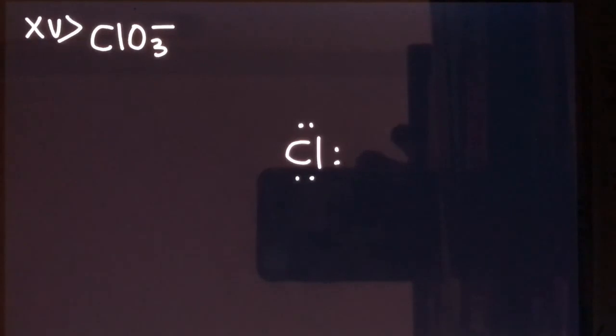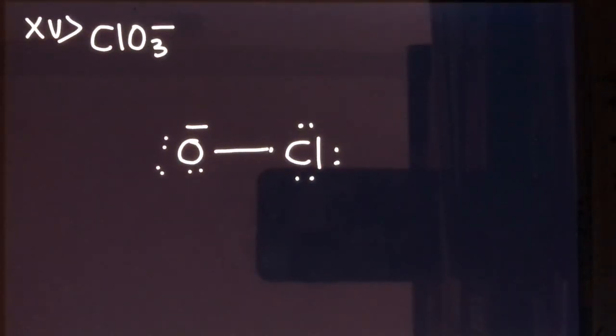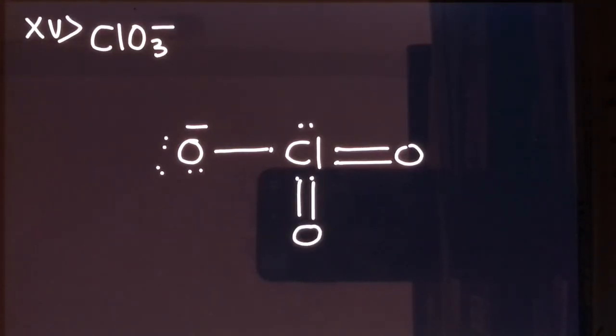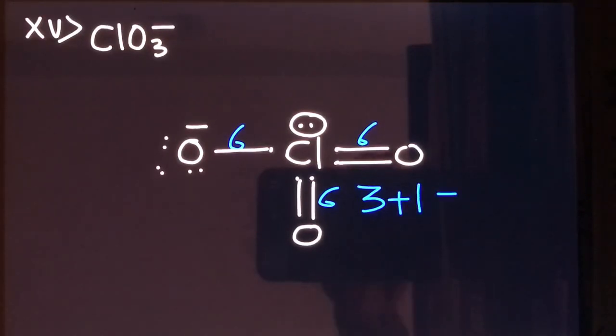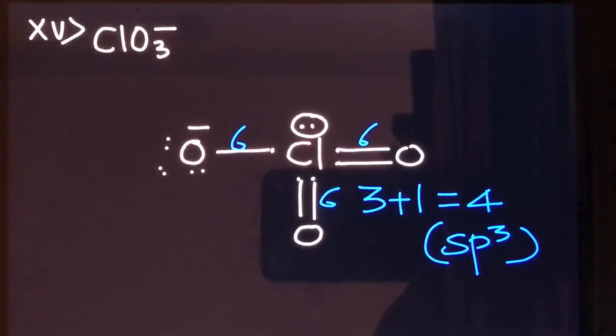Now let's see the chlorate ion ClO₃⁻. Chlorine has seven outermost electrons with one negative charge. One oxygen is attached with a single bond, and the remaining two oxygens are attached with double bonds. There is one lone pair left on chlorine. So there are three sigma bonds plus one lone pair — steric number is four and hybridization will be sp3. That's the end of the lecture. I hope you enjoyed it.